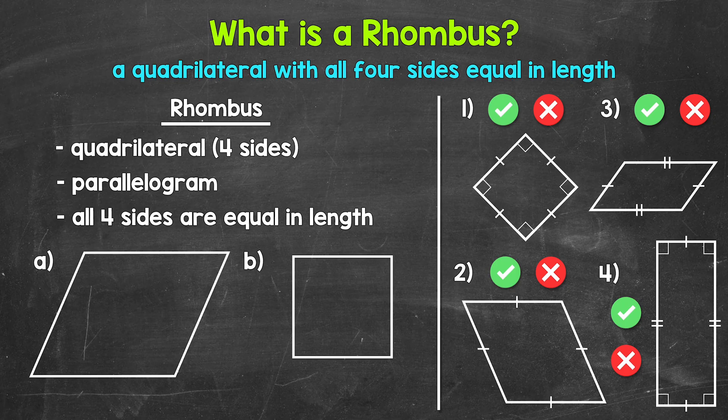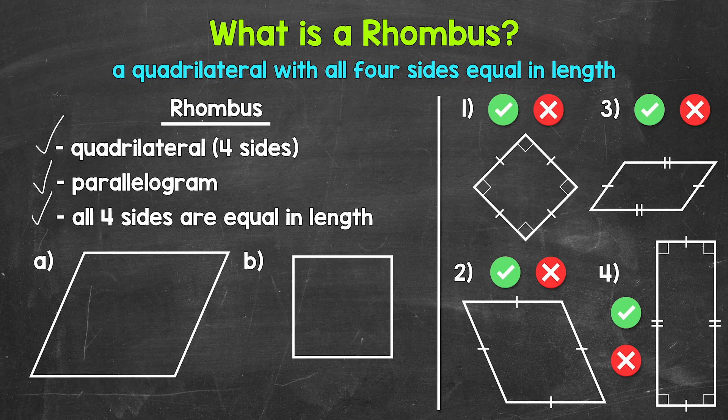Rhombuses are quadrilaterals — they have four sides. More specifically, rhombuses are parallelograms. They have two pairs of parallel sides. Opposite sides are parallel and the same length. Opposite angles are the same measure as well. And to take that a step further than just a parallelogram, a rhombus has to have all four sides equal in length.